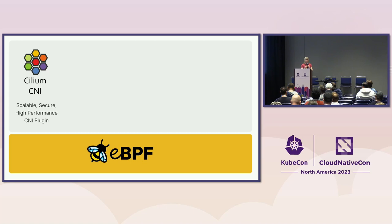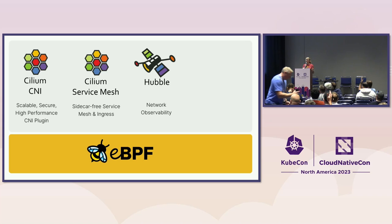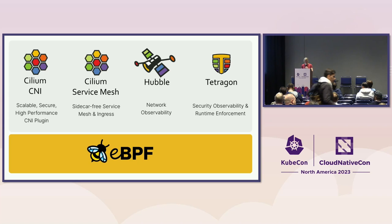Let's have a quick refresh on what Cilium is. Probably most of you know it best as a CNI, a networking solution for Kubernetes, although it isn't just for Kubernetes. You will probably be aware of Cilium Service Mesh and some of the features around Ingress, Gateway API, and mutual authentication that we've been talking about this week. How many of you have used Hubble for observing network packets?